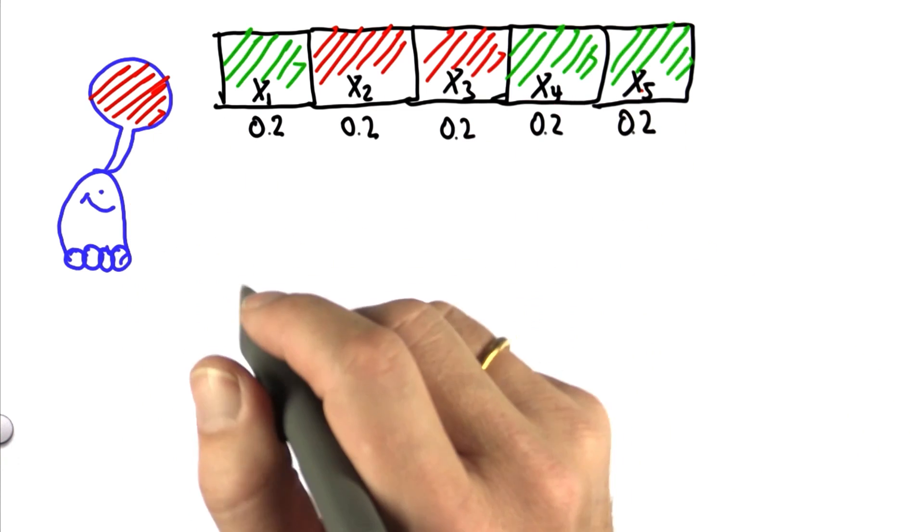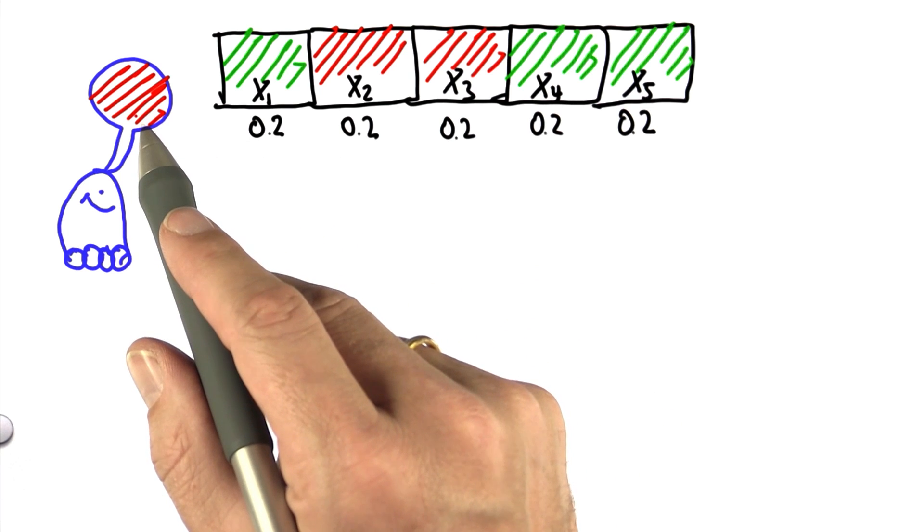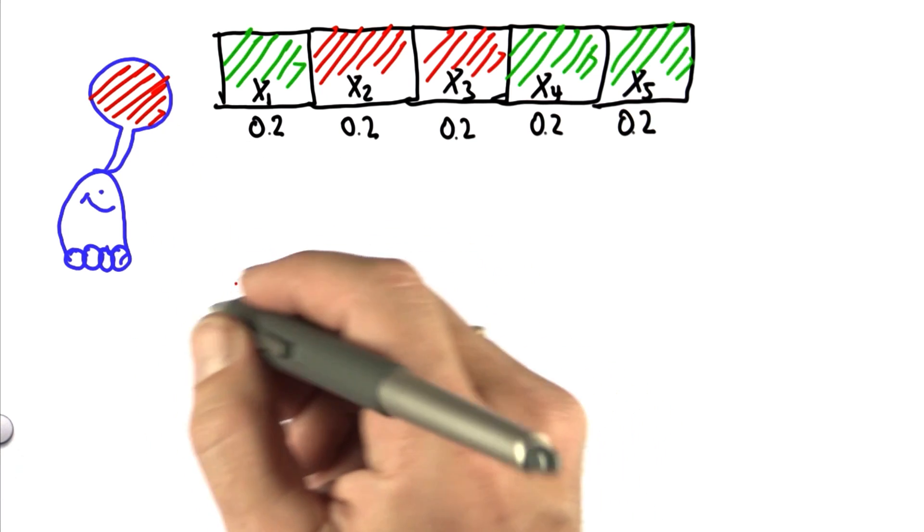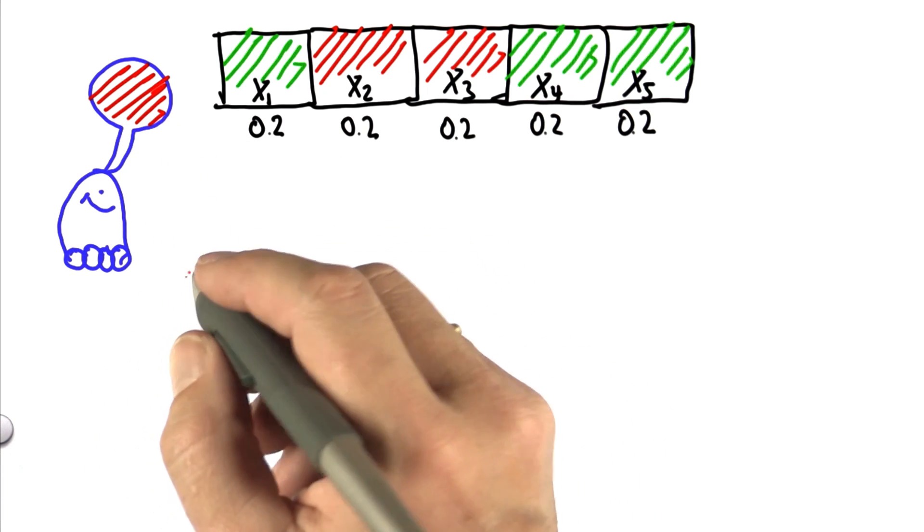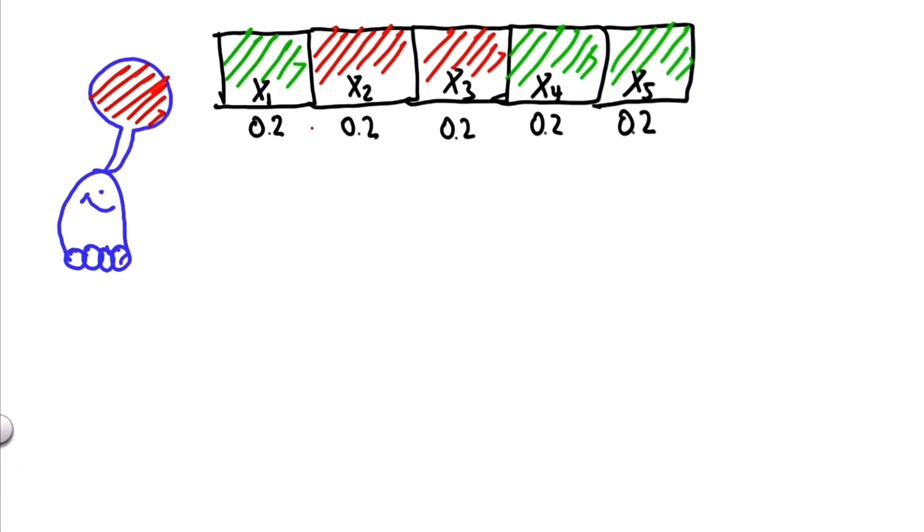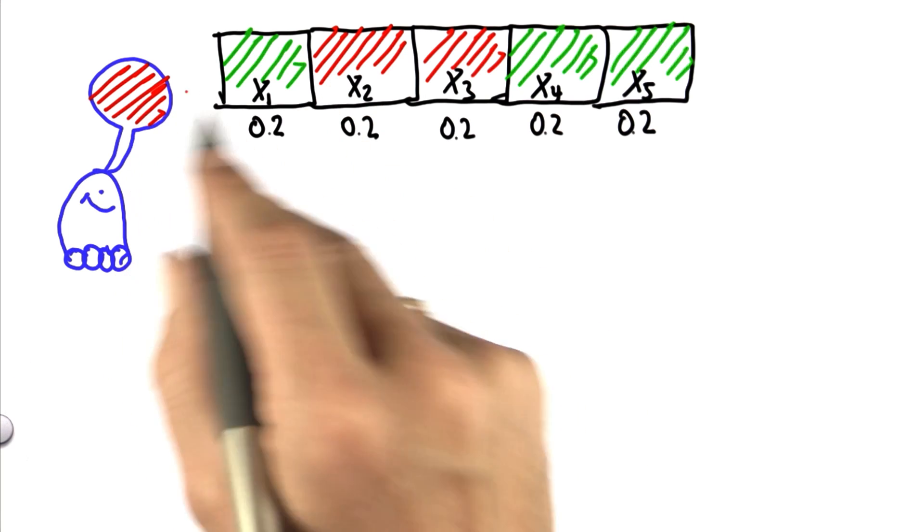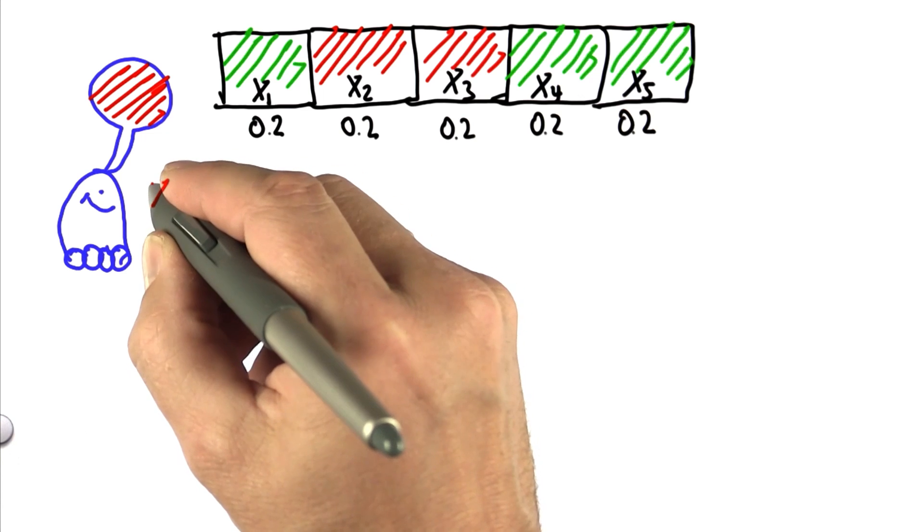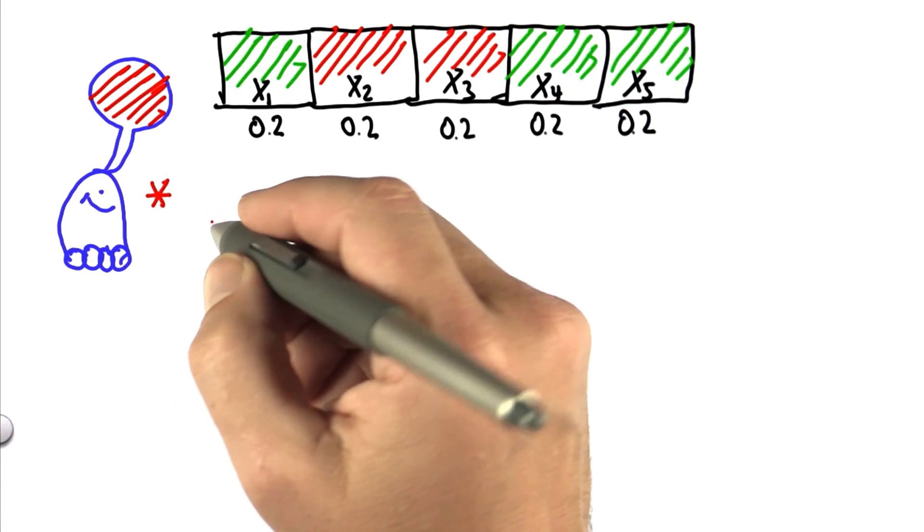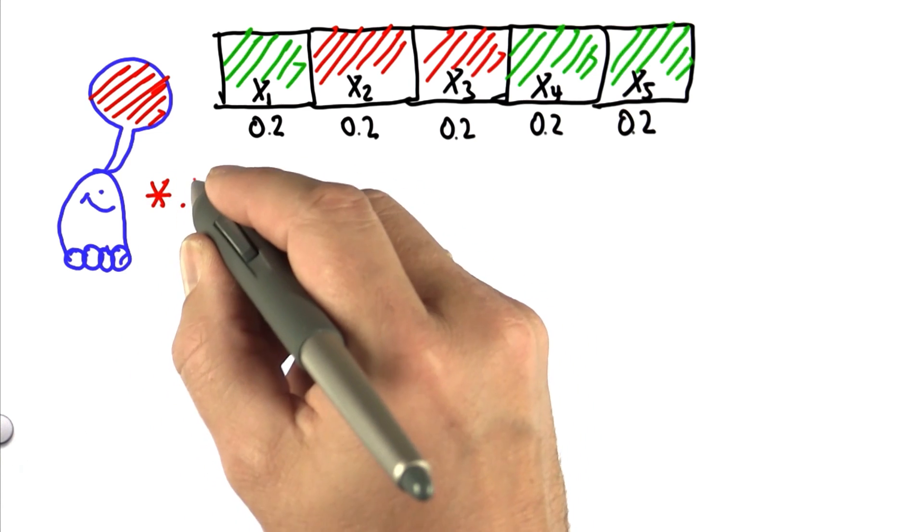So I'm going to now tell you how to incorporate this measurement into our belief with a very simple rule, a product. Any cell where the color is correct, any of the red cells, will be multiplied with a relatively large number, say 0.6.